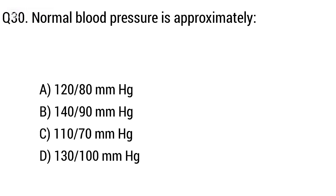Question 30: Normal blood pressure is approximately option A: 120 over 80 mmHg. The right answer is option A, 120 over 80 mmHg.